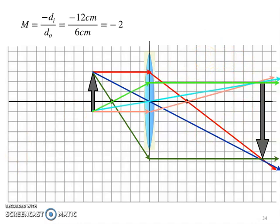Turning to the magnification equation. Negative image distance, negative of positive 12. I guess I added centimeters. I pretended we're in centimeter units for this slide.